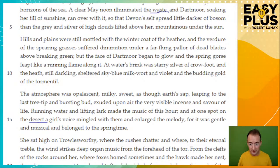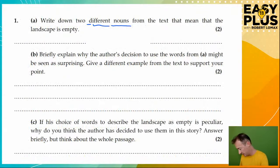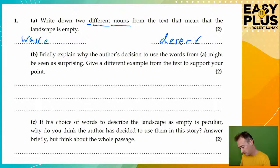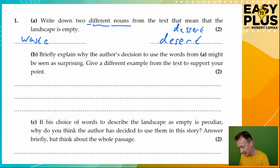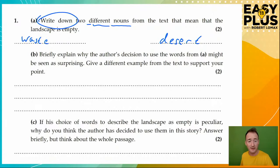So we've got 'waste' and we've got 'desert.' Do not write 'dessert' — that means something different, like a trifle or a sponge cake. 'Desert' has got one S. 'Write down' is a strong indication you don't need to provide a sentence answer — you can just write down the words, literally. That's it.